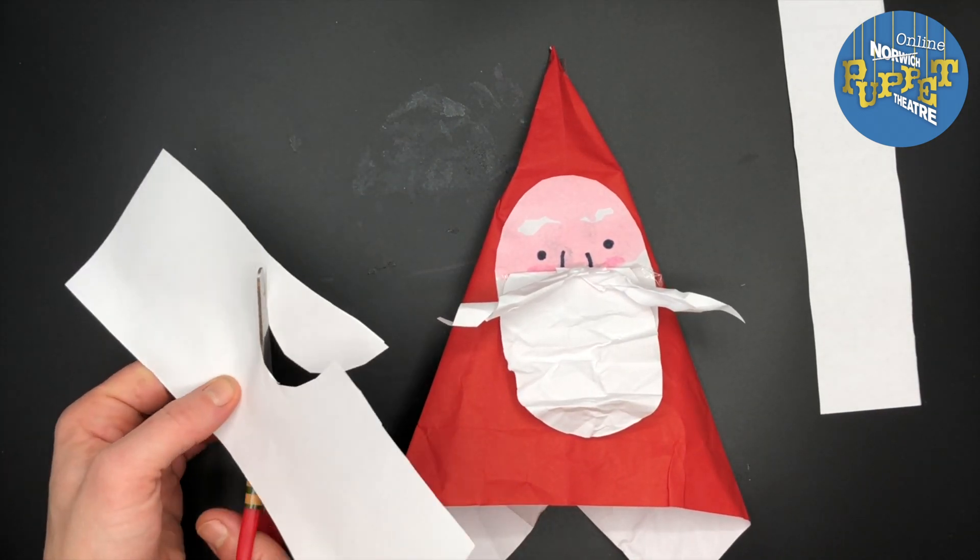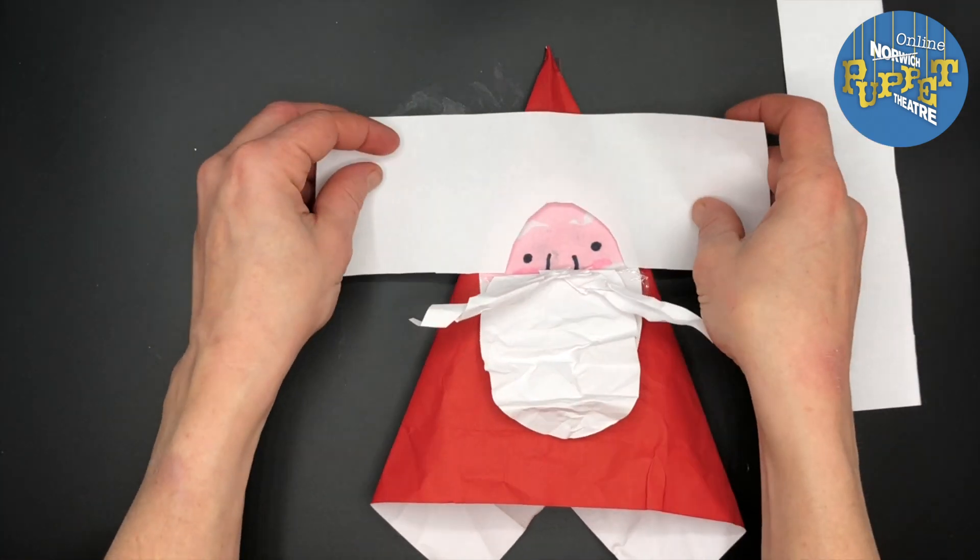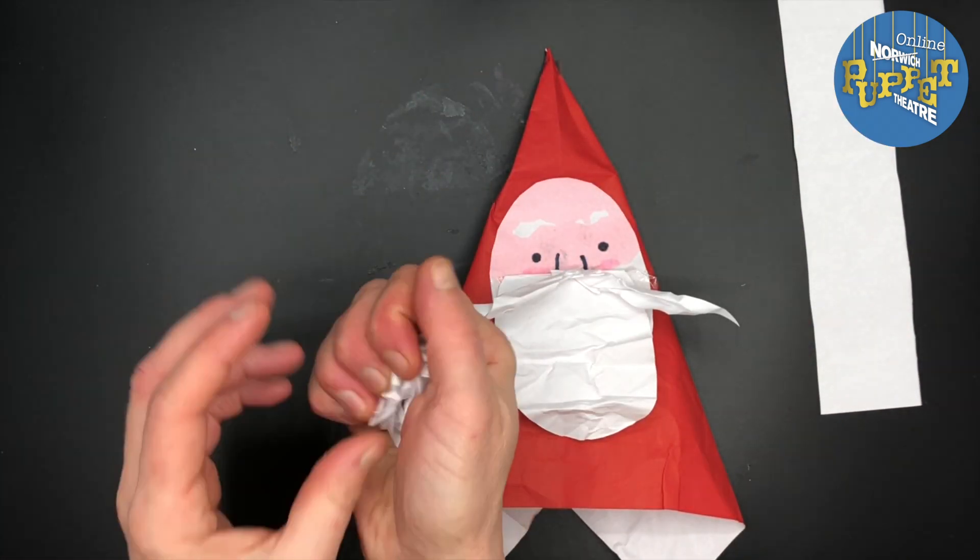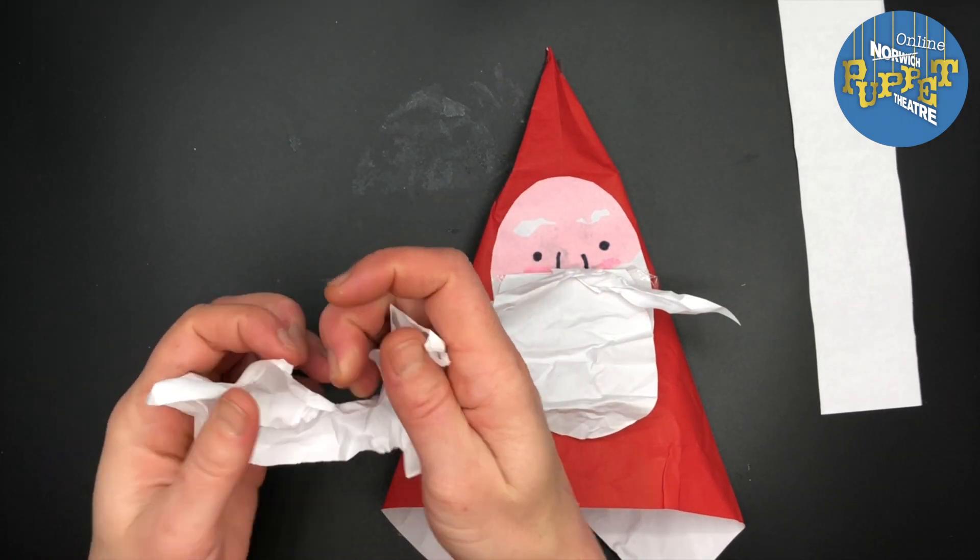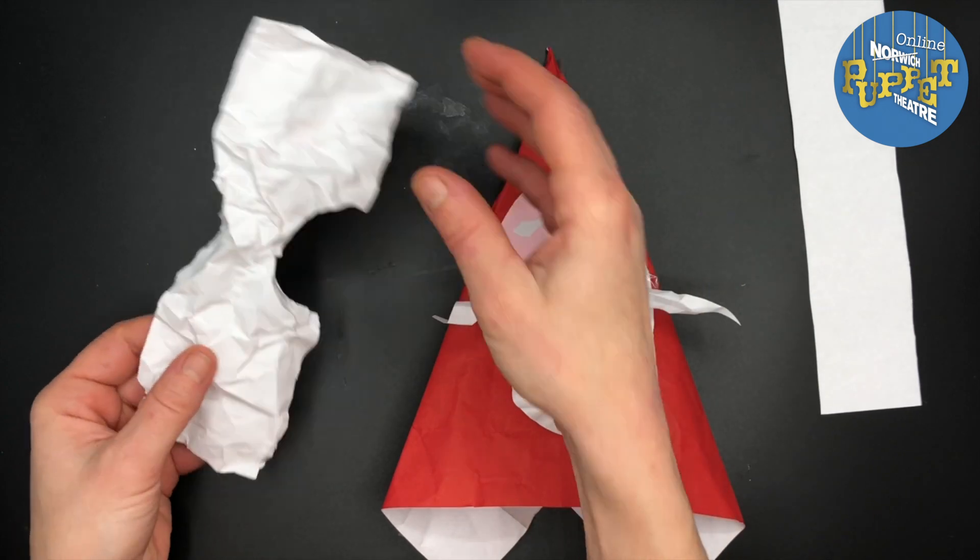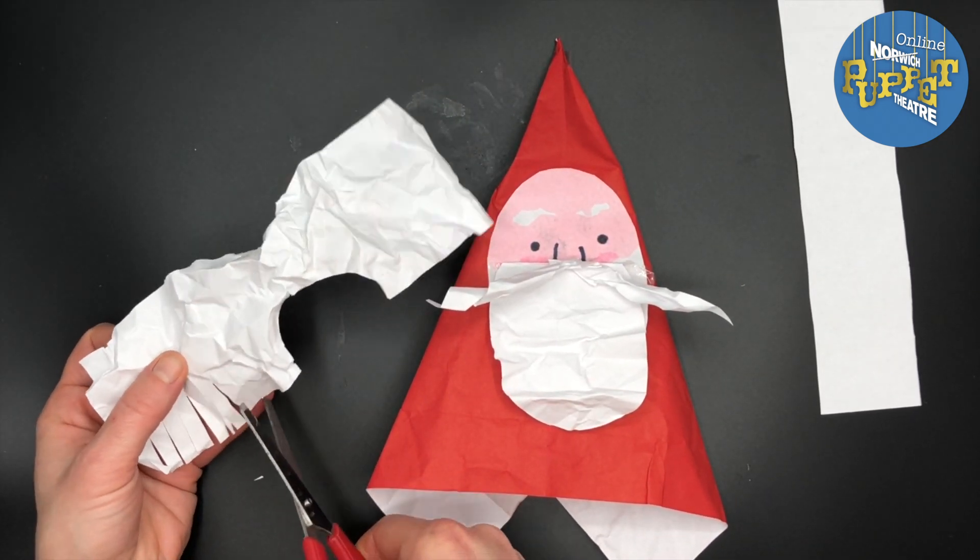Next, the hair and hat brim. Take another strip of paper and cut out a semi-circle that's a little bit smaller than Santa's face. Scrunch up your paper, unfold it, and then make a series of small cuts to fringe the edge of the paper on the same side where your semi-circle is.